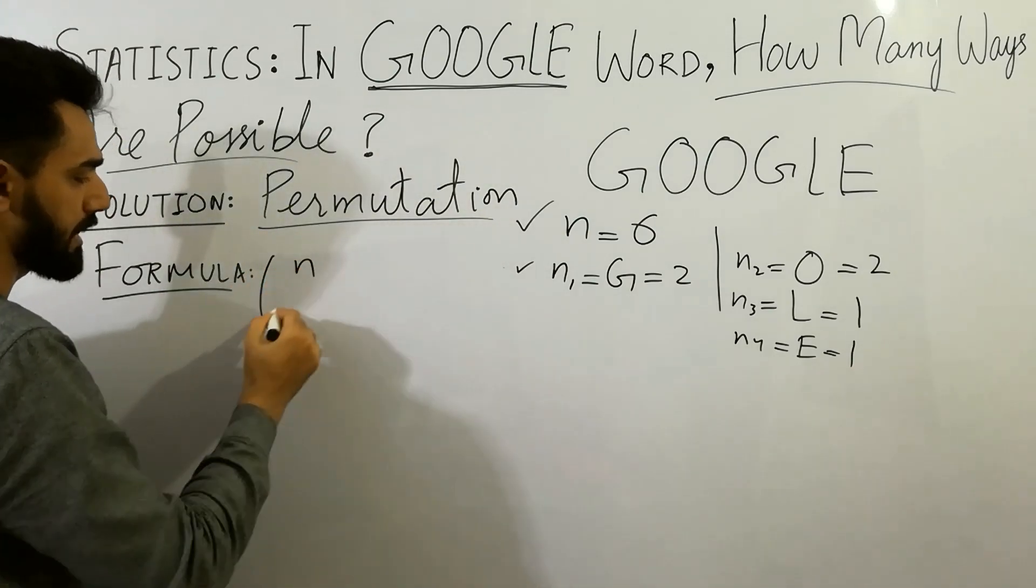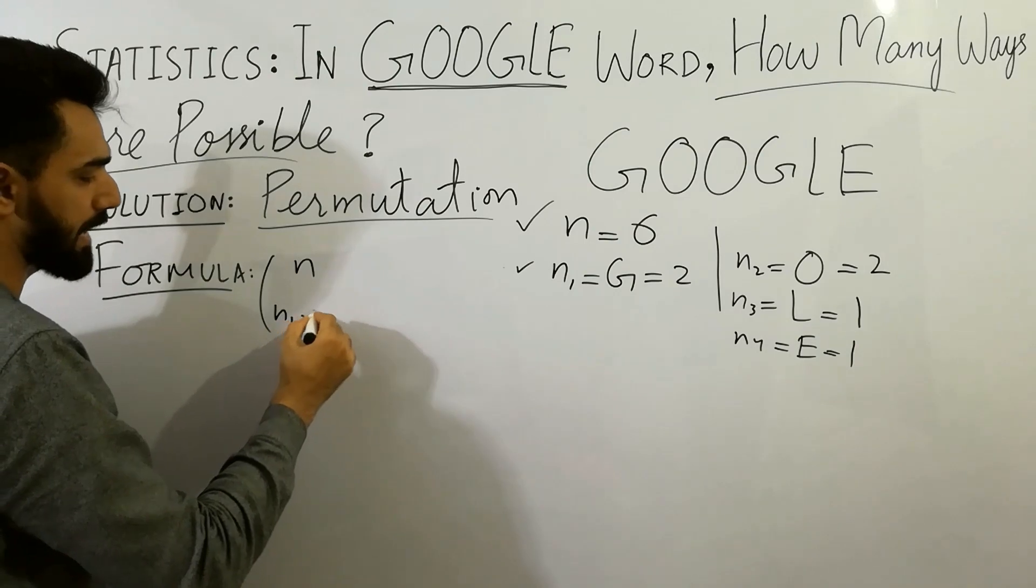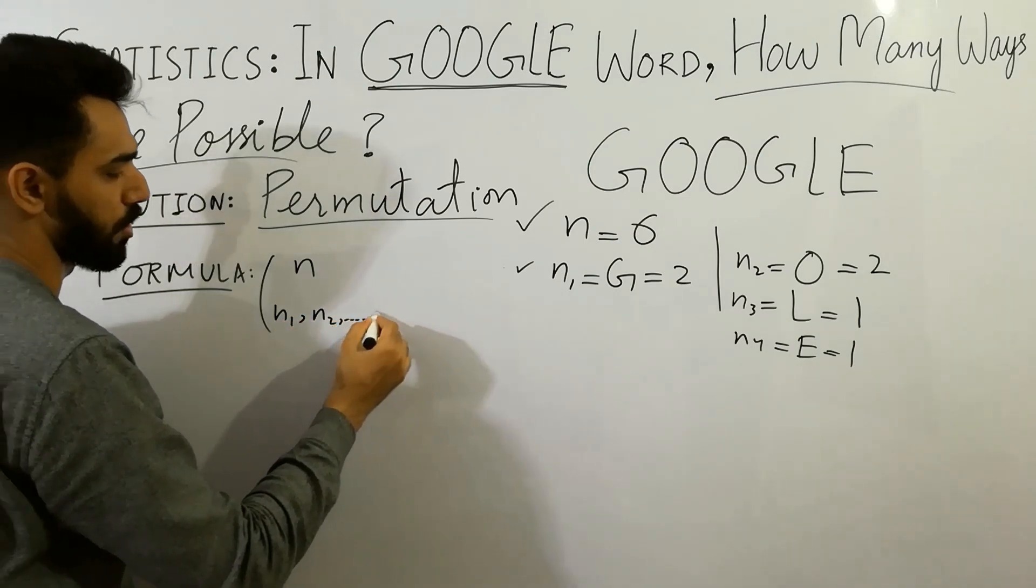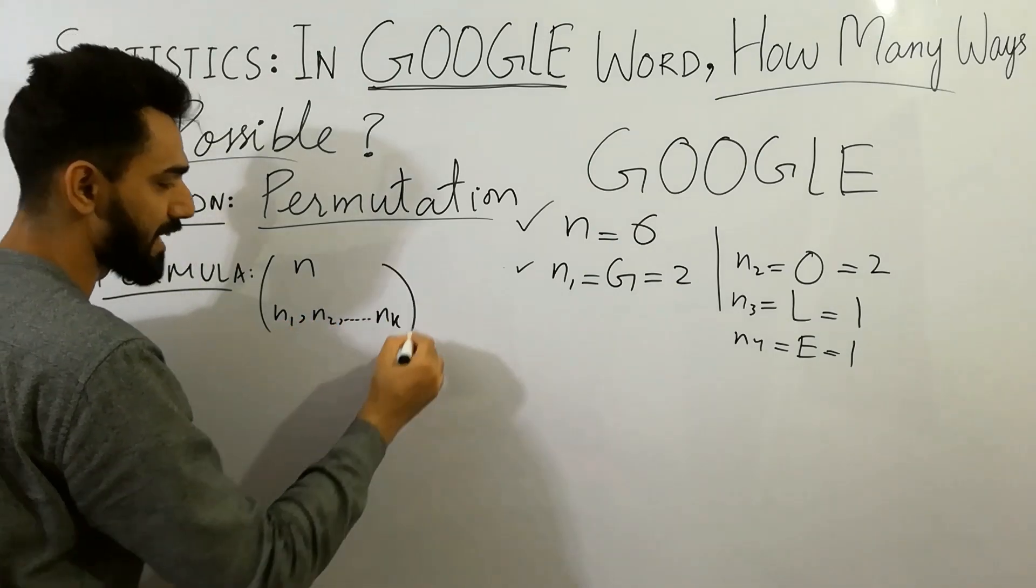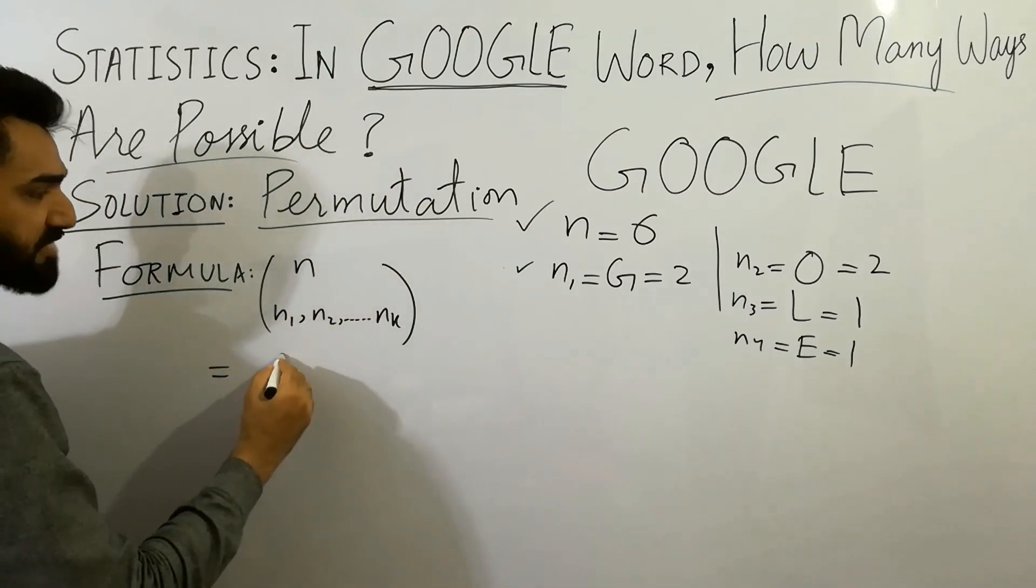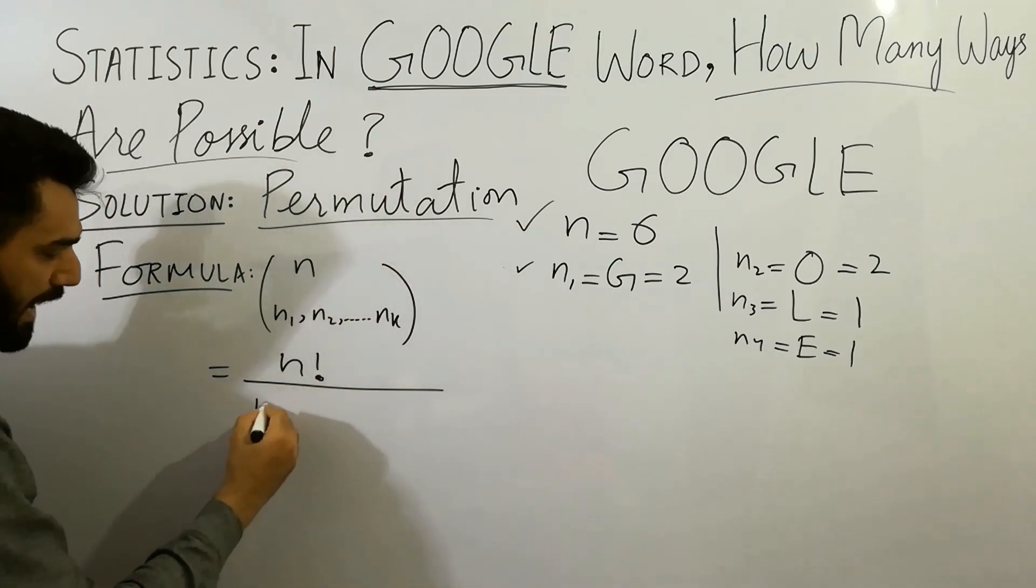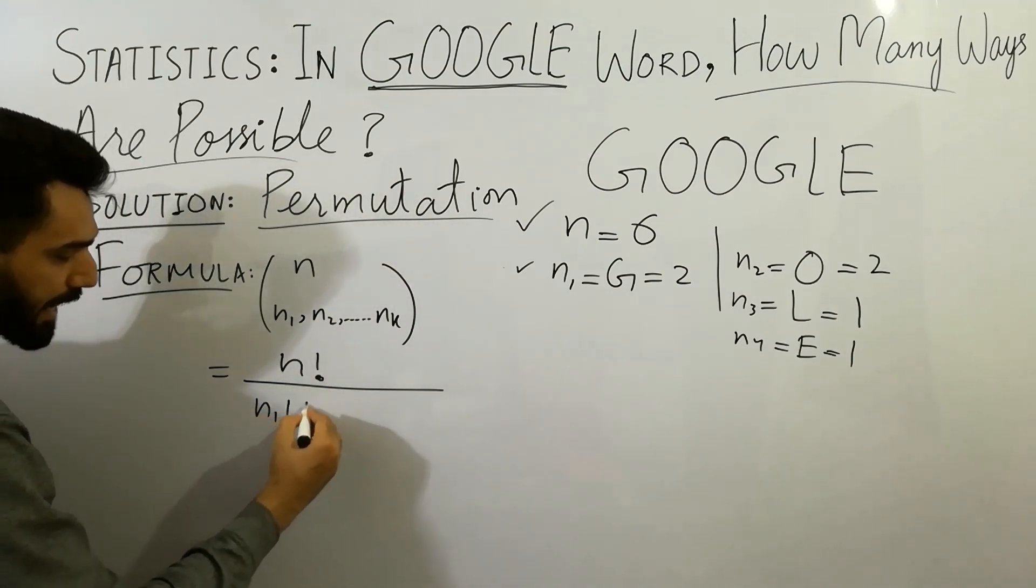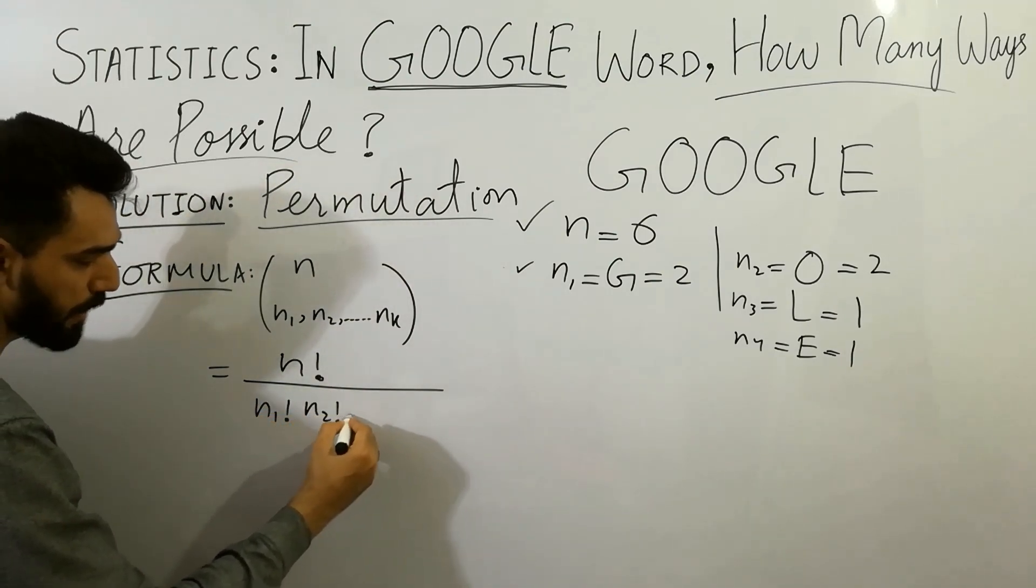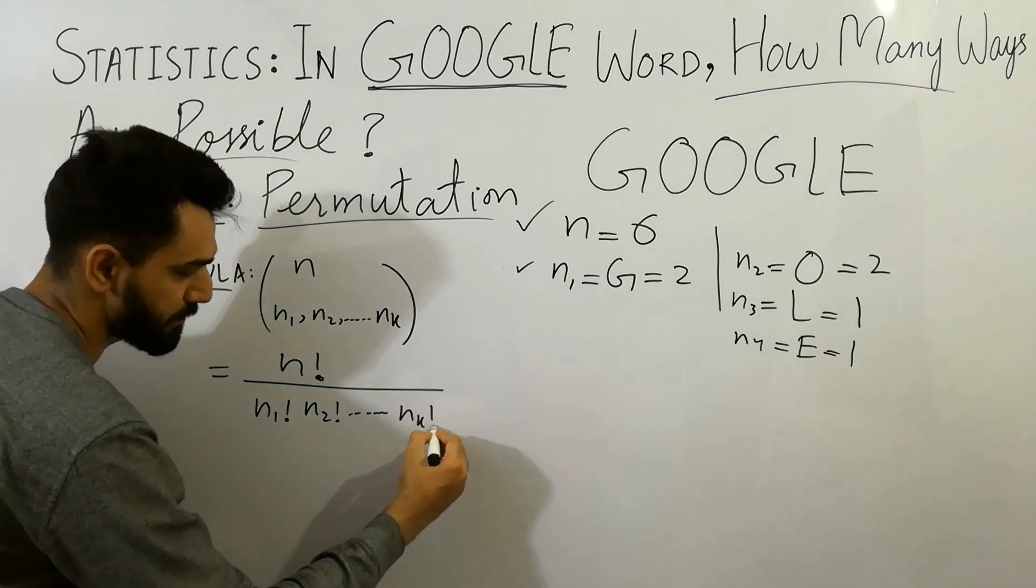Do you know that N(N1, N2, up to NK) is always equal to N factorial divided by N1 factorial, N2 factorial, and so on, NK factorial. Must remember.